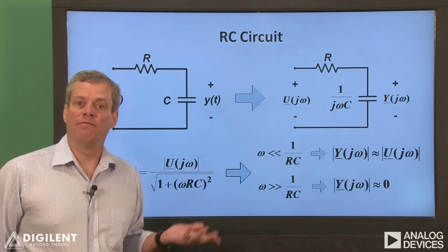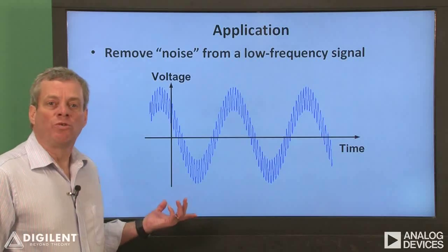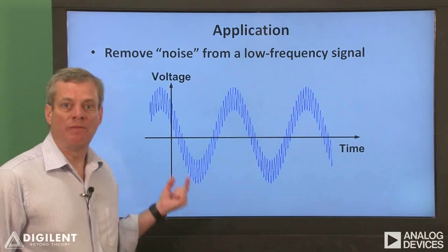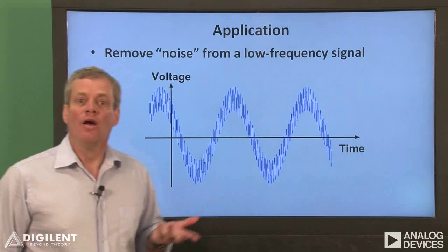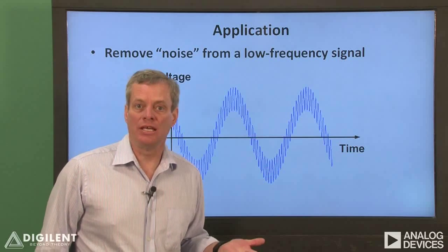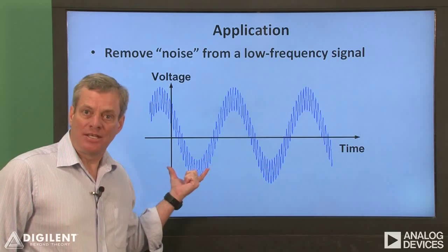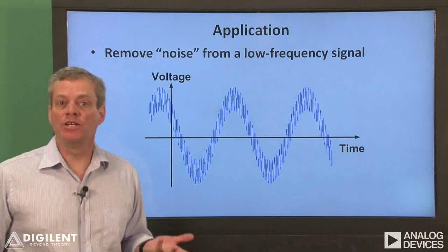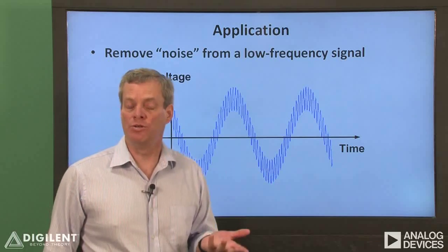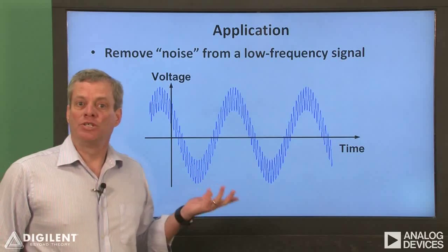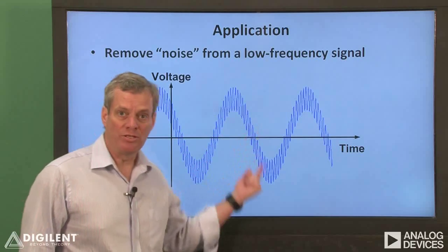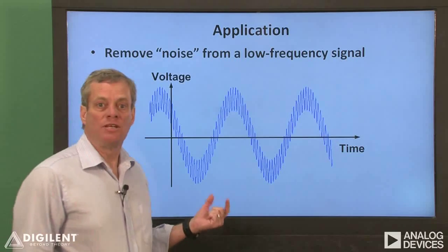Now let's take a look at how we can use this behavior to our advantage. Suppose that we're measuring a fairly low frequency sinusoidal signal. Unfortunately, when we measure this signal, we get some high frequency noise associated with it. We want to remove this noise so that we can get a better feeling for what the original signal actually is. What we can do is apply this signal as the input to the circuit. If we then measure the capacitor voltage, we should see a cleaned-up version of this waveform with the high frequency noise component reduced or eliminated. We just need to make sure that 1 over RC is above the frequency of the low frequency sinusoid and well below the frequency of the noise we want to eliminate.